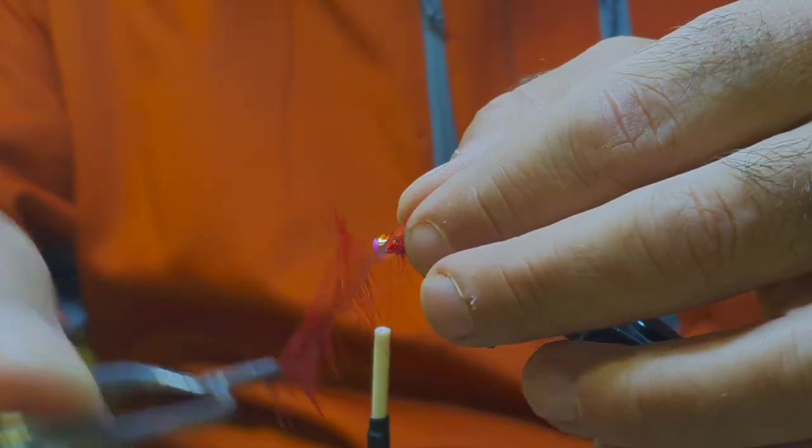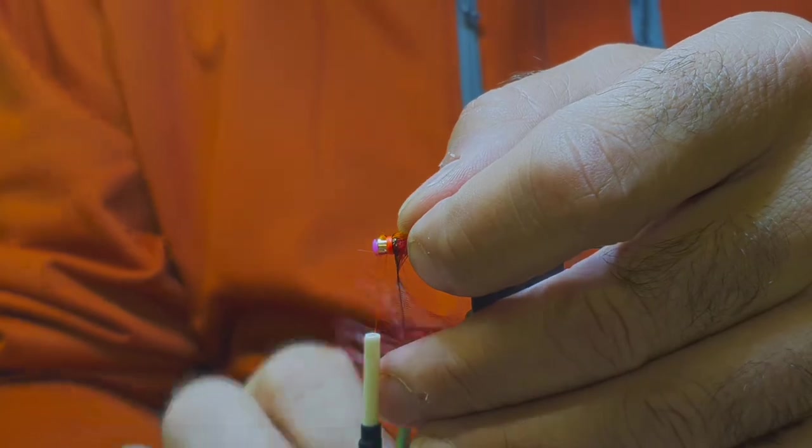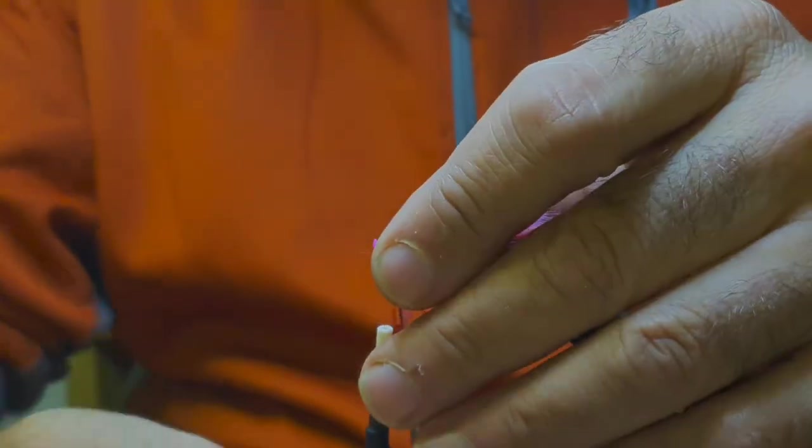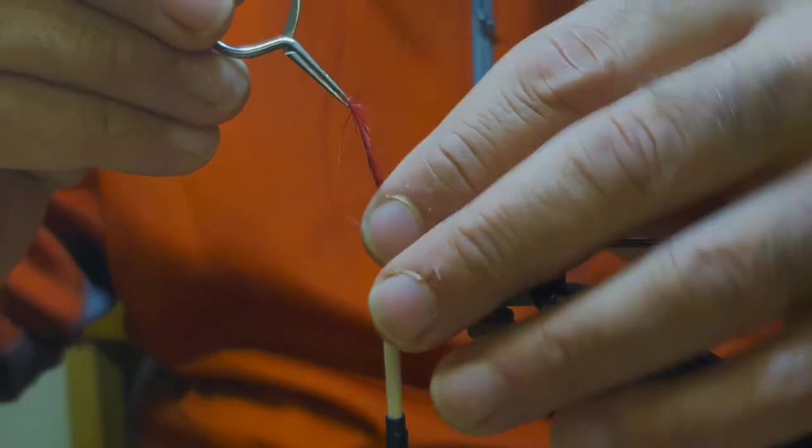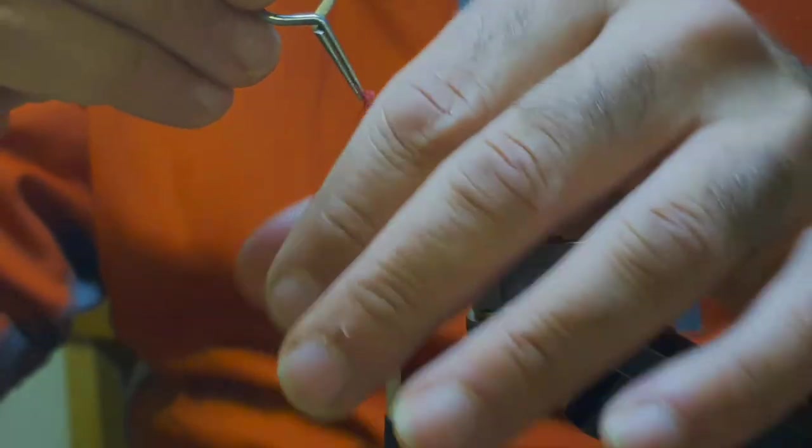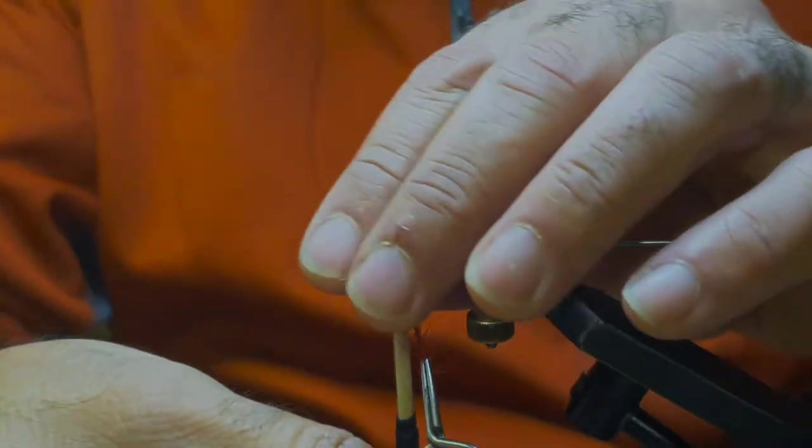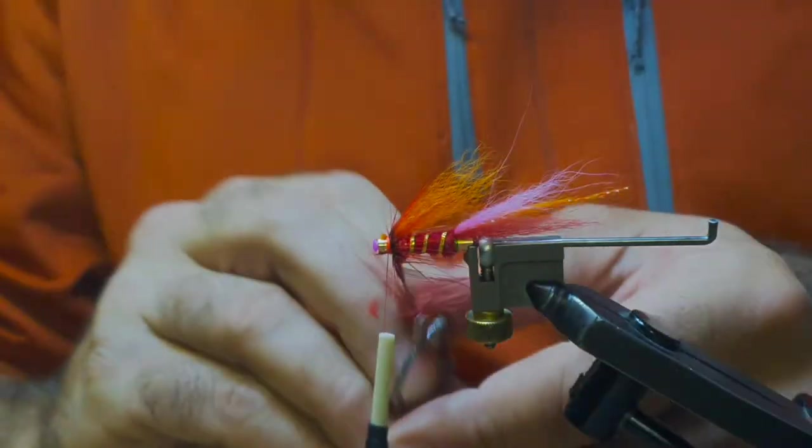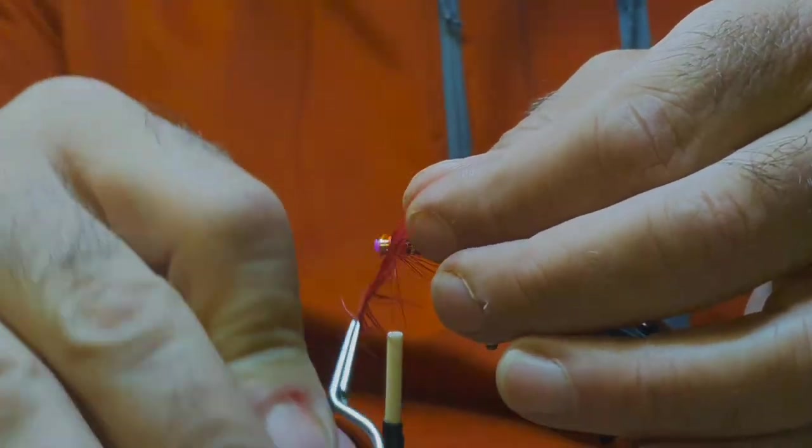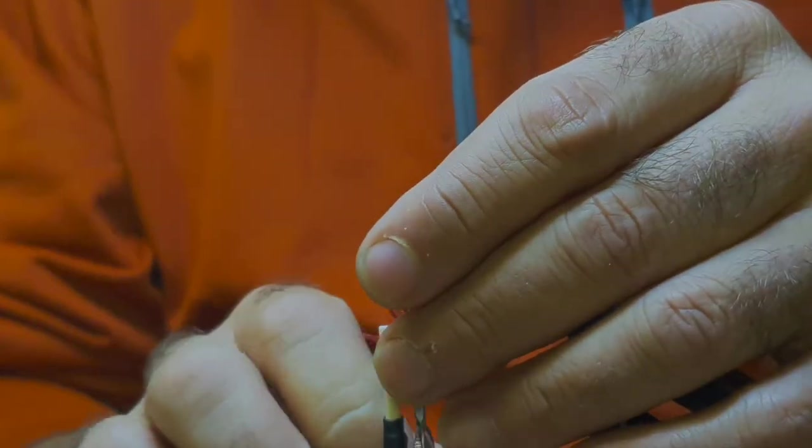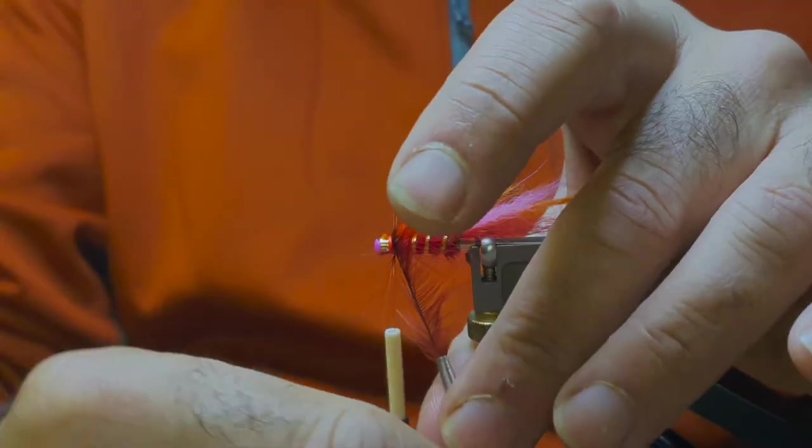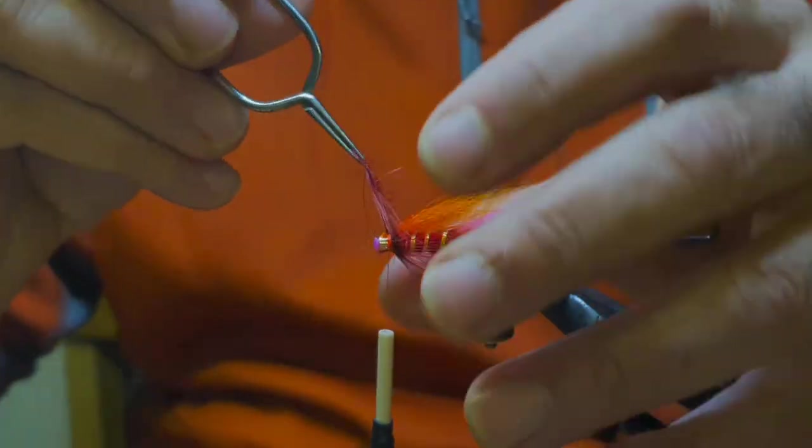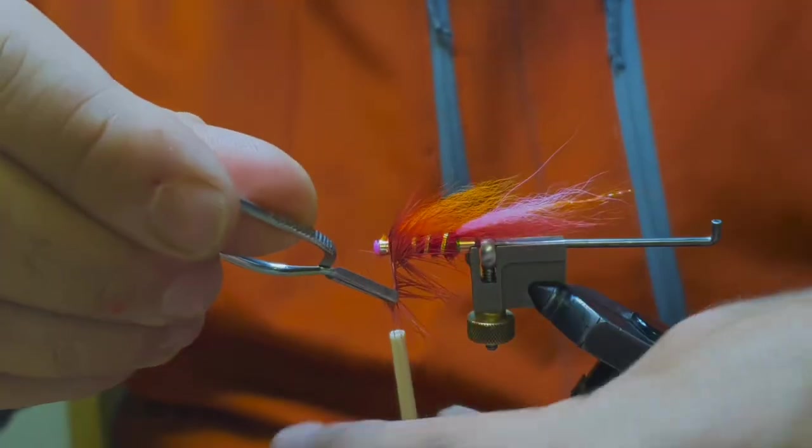Just sweep the fibers backwards as you go. It's easier just if you wet your fingers, just pull them back gently. One, three or four turns the hackle. This will probably be the last turn for this one. Just take your time, get it right. There we go.